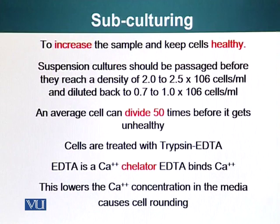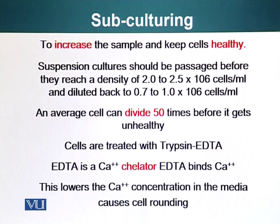To increase the sample, we can also subculture. For example, we placed a certain amount of cells in a dish. After two or three days, from whatever number of cells you placed in the dish, we now have 10 or 100 times more cells. You can split these cells, remove them from the dish, divide them into smaller groups, and then plate them again on new dishes. That way you can increase the number of your sample, and it also keeps the cells happy.